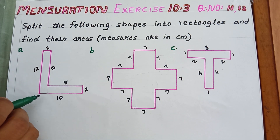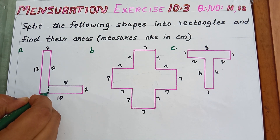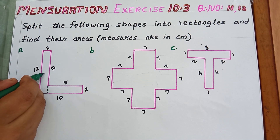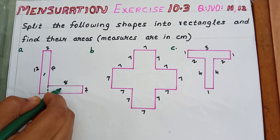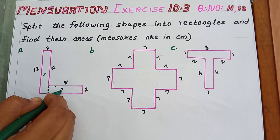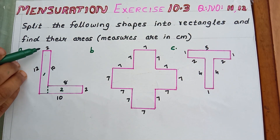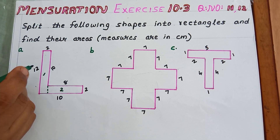Considering the first shape, we can divide it like this. Now we got two rectangles — this is the first rectangle and this is the second rectangle. Thinking about the first rectangle, the length of this rectangle is 12 cm, as they have given it.